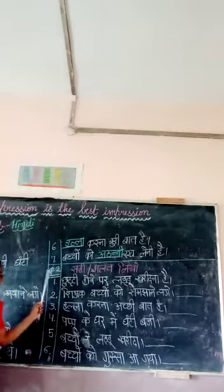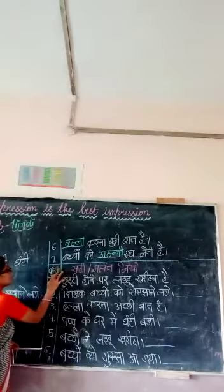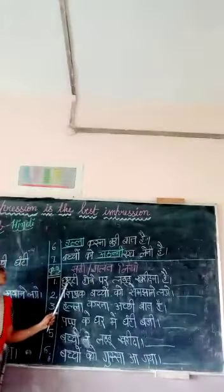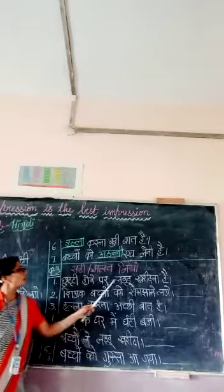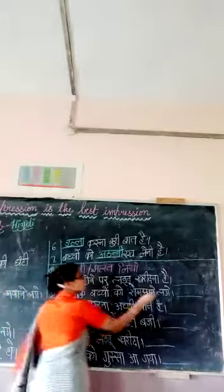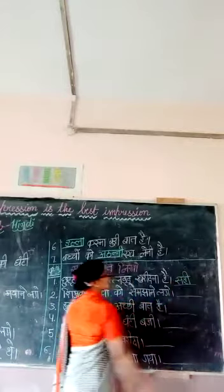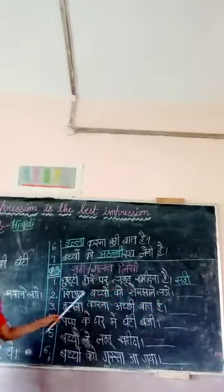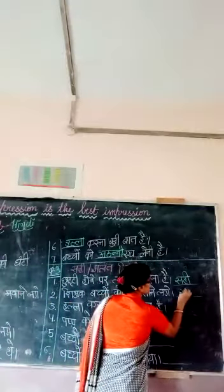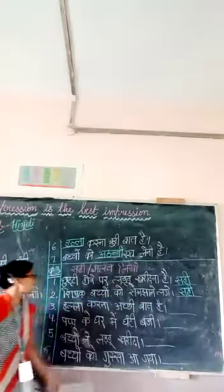Now continue. Sahi, galab, liko. Question number three to first one. Chutti hoonay par lattu khari dna hai. Sahi. Bacho ko chutti hoonay par kya khari dna hai? Lattu. Sahi. Sikshat bacho ko samjhani lag hai. Sahi. Jamb bacho show kar raha hai thai. Tab bacho ko kon samjhani laga? Sikshat.